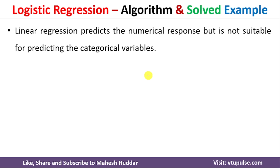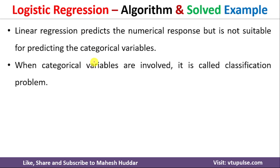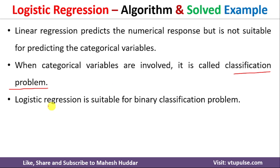Linear regression is used whenever we want to predict numerical responses — that is, if the dependent variable is of type numerical or continuous, we use linear or polynomial regression. But if the response variable is categorical in nature, we cannot use linear regression. Such problems are called classification problems, and they can be solved with logistic regression — specifically when the classification is of binary nature, meaning the target variable contains only two possibilities.